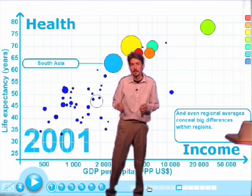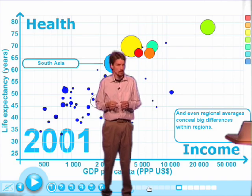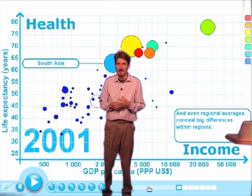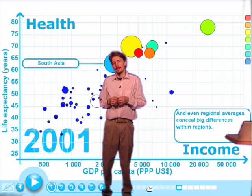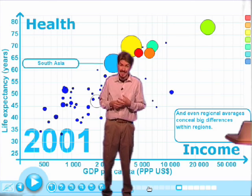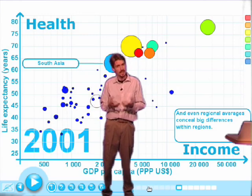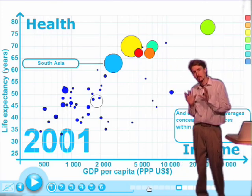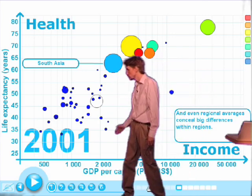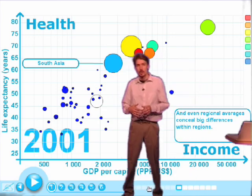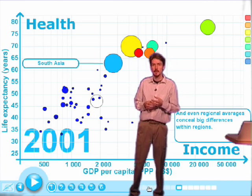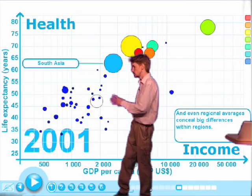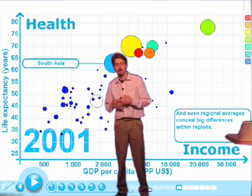How come? Because of two things. The inequality in the country is one reason — although there are rich people, there are also a lot of poor people who don't have access to health care. But it's also because of the HIV/AIDS epidemic, which pulled down life expectancy by at least 10 to 15 years in a country like South Africa. Although there are big differences within the region, most countries in Africa have lower income and lower life expectancy than basically all other countries in the world.